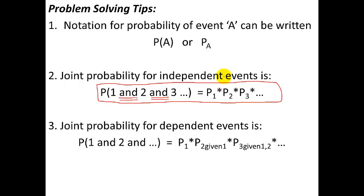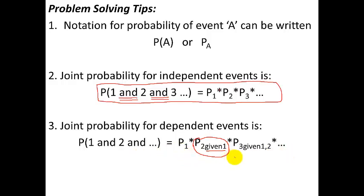For dependent events, the formula is basically the same except the probabilities you plug in for everything after the first event is the probability of the second event happening given the first one, because the second depends on the first. What's the probability of the third happening given the first two happened? In practice it's not too difficult to understand, even though the notation isn't the most beautiful.